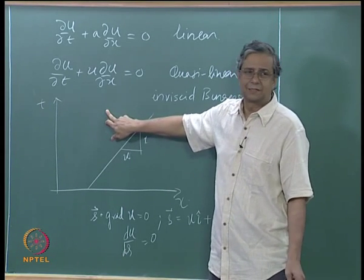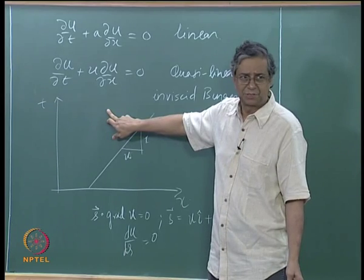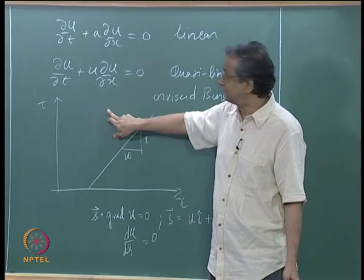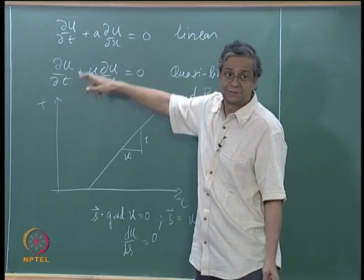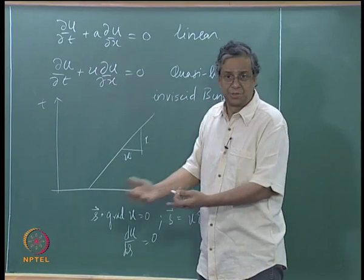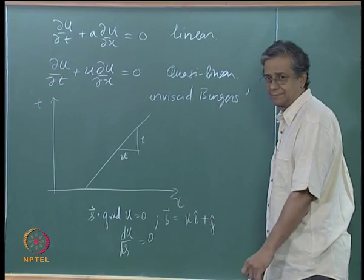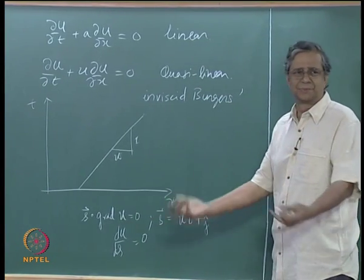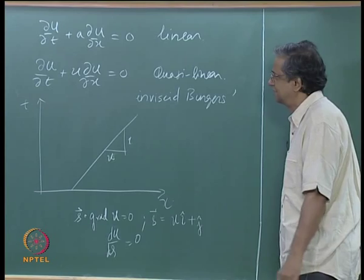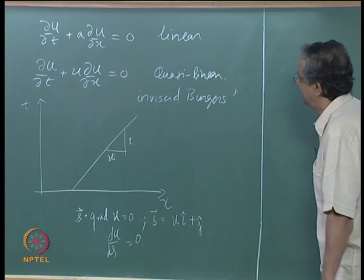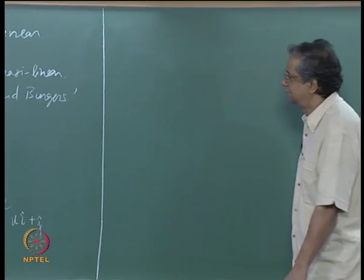Clearly we cannot do the exponentials like we did last time, because the exponential function had a in the exponent and then we would be writing u in terms of itself. That doesn't help us — it's an implicit form.